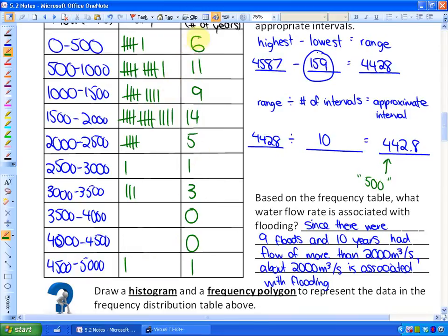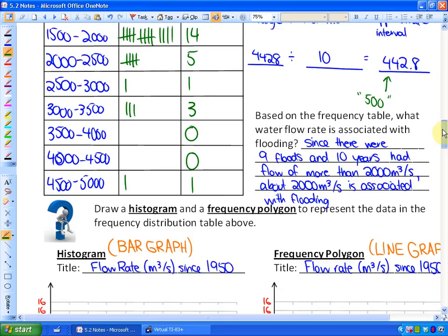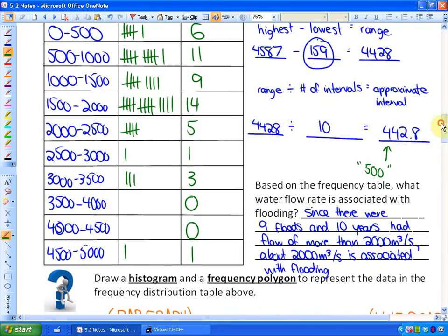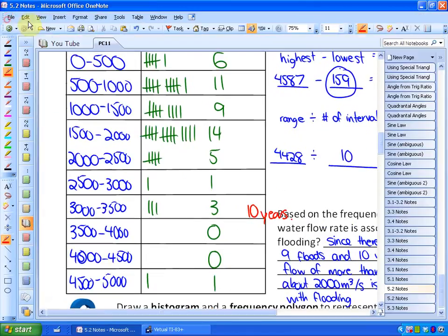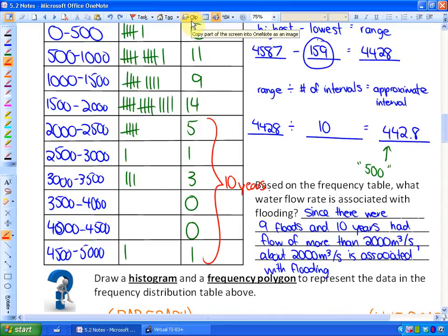So what we're going to do is now put this information into two different types of graphs. So I'll be using this information to do this. One other question that's here. It says, based on the frequency table, what water flow rate is associated with flooding? And what it mentioned is that there were a total of 9 floods since 1950. So if we look at all these numbers, this is a total of 10 years. So I would say basically that's the cutoff there as far as flooding goes. So anything above 2,000 is going to be flooding. So since there were 9 floods in 10 years that flow of more than 2,000 meters cube per second, approximately 2,000 meters cube per second is associated with flooding. That helps organize the data.